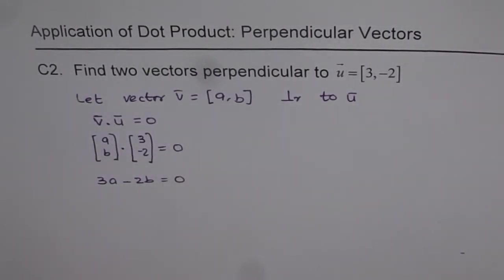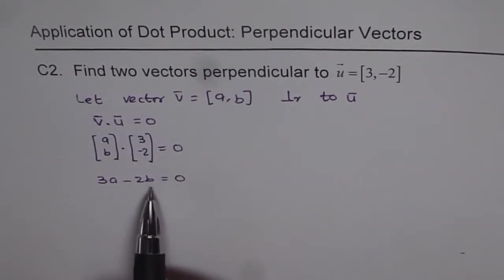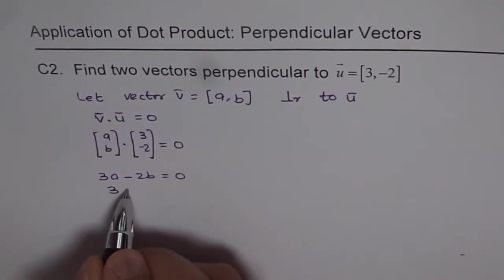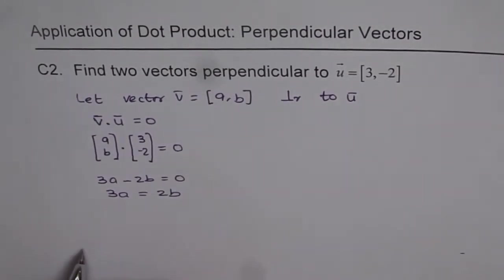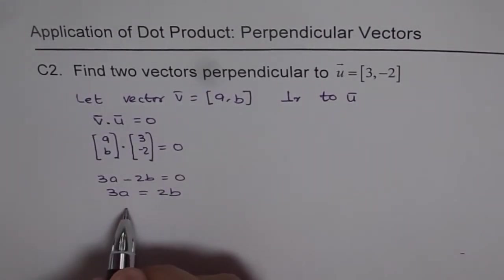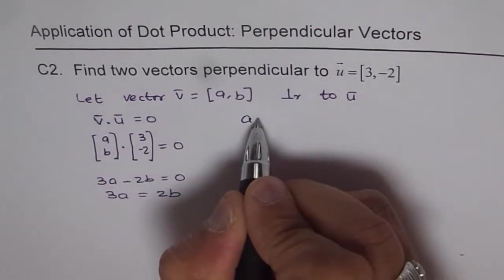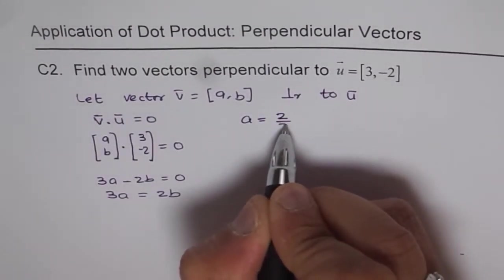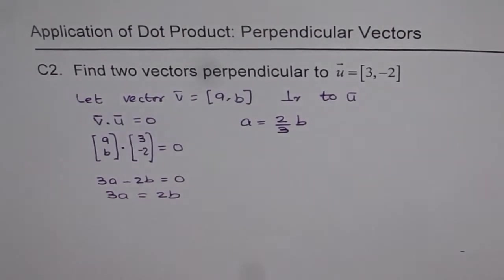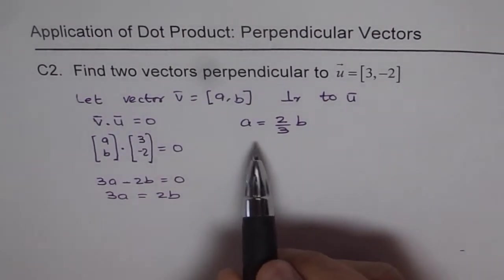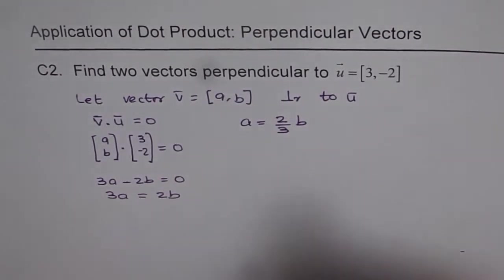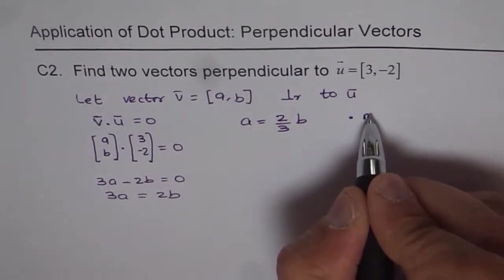In this equation, you'll notice there are two variables and we have just one equation. How to solve for this? You can write a in terms of b. In this case, 3a = 2b, so a = (2/3)b. When we get this kind of situation, that means we have multiple solutions.